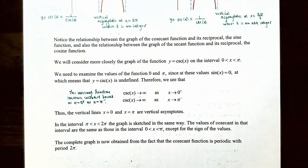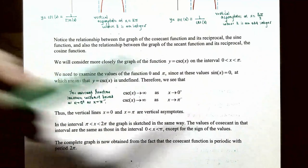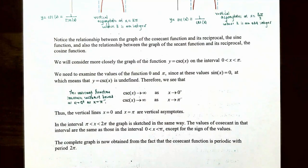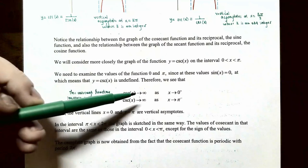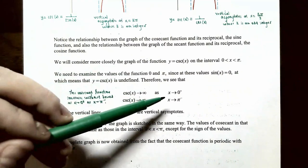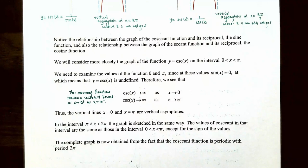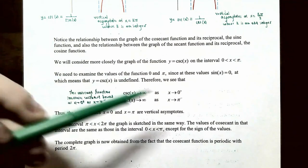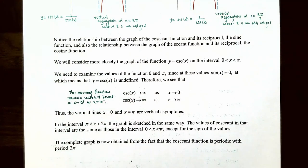Now let's consider more closely the graph of y equals cosecant of x on the interval between 0 and π, not including x equals 0 and not including x equals π, because those are vertical asymptotes for the cosecant function. At these values sine of x equals 0, which means cosecant of x is undefined. From the graph, the cosecant function increases without bound, approaching positive infinity, as x approaches 0 from the right, because the sine function is positive there. Cosecant also approaches positive infinity as x approaches π from the left, also a vertical asymptote where sine is positive.